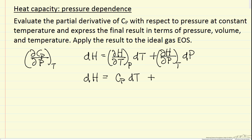Now we're going to apply a Maxwell relation. We're going to take the derivative of this heat capacity with respect to pressure at constant temperature, and take the derivative of the right-hand term with respect to temperature at constant pressure. We'll set those two second derivatives equal to determine how heat capacity changes with pressure at constant temperature.